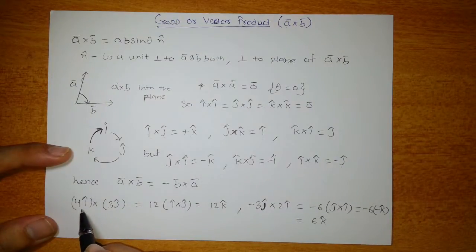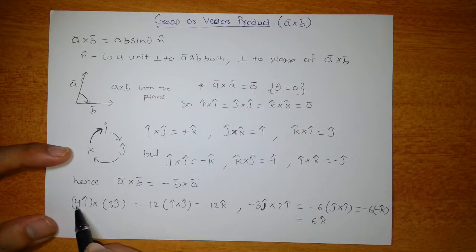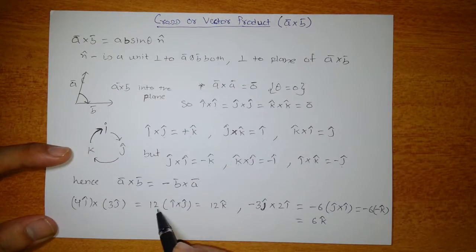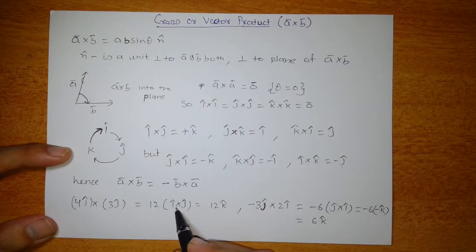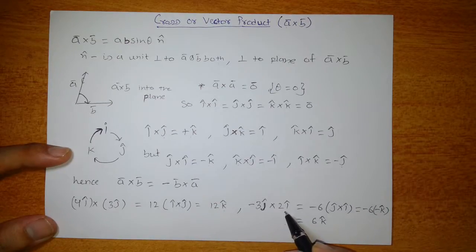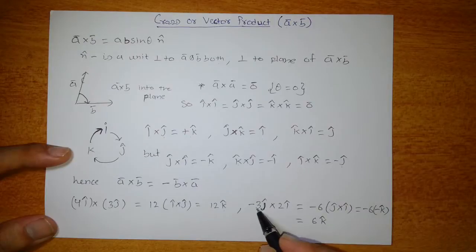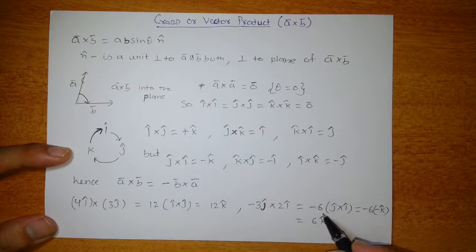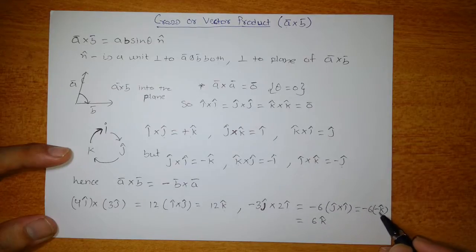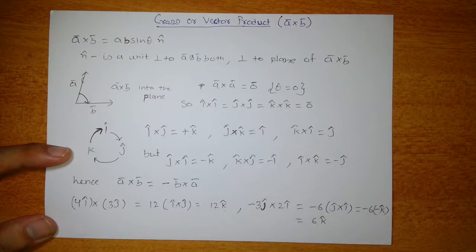Let's calculate some simple cross products. First example: 4î cross 3ĵ. Multiply the coefficients: 4 × 3 = 12, and î cross ĵ = k̂, so the answer is 12k̂. Second example: −3ĵ cross 2î. The coefficient is −6, and ĵ cross î is itself −k̂. The two negatives cancel, giving 6k̂.